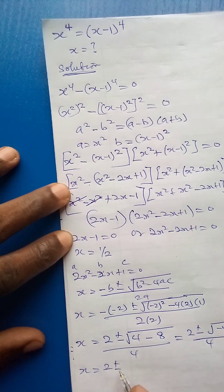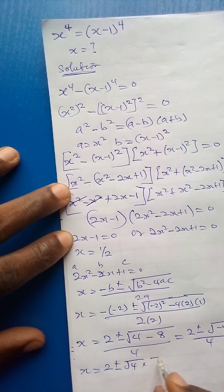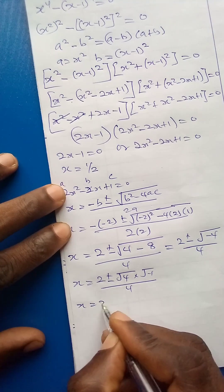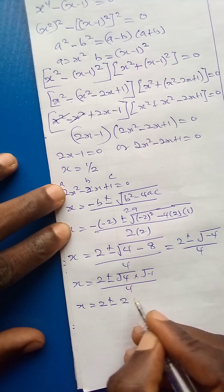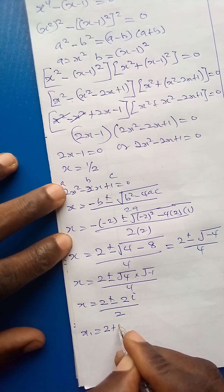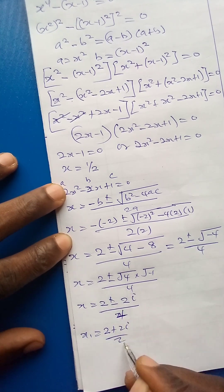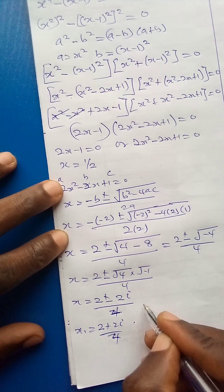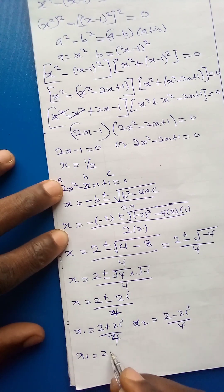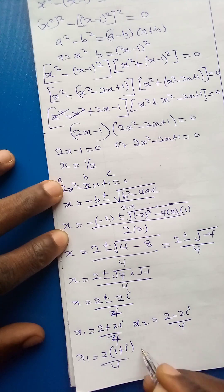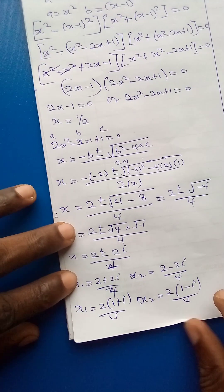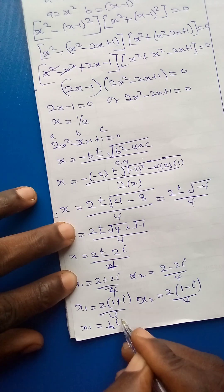We write the square root of minus 4 as 2i, since root 4 is 2 and root minus 1 is i. So x equals 2 plus or minus 2i, all over 4. Therefore x₁ equals 2 plus 2i over 4, which simplifies to one half times 1 plus i, and x₂ equals 2 minus 2i over 4, which simplifies to one half times 1 minus i.